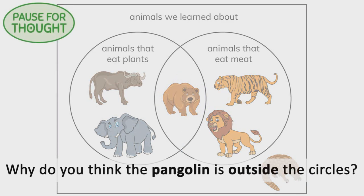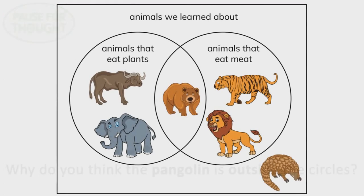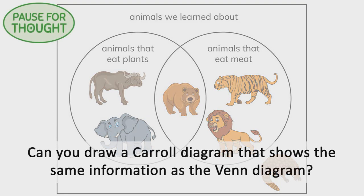Why do you think the pangolin is outside the circles? The pangolin is outside the circles because it doesn't eat plants or meat. Pangolins eat insects. Can you draw a Carroll diagram that shows the same information as the Venn diagram?